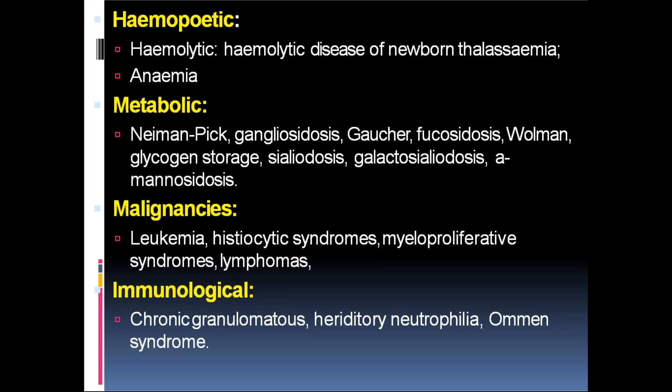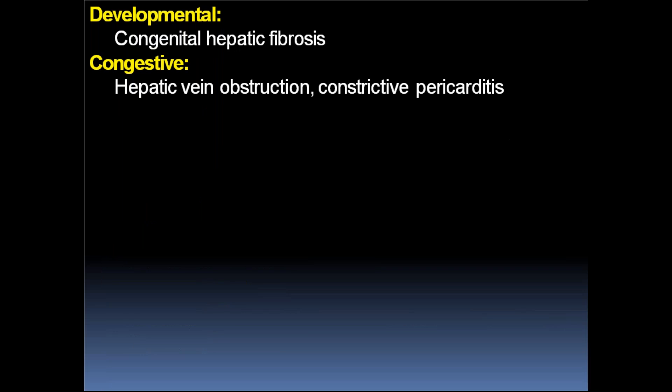Metabolic causes of hepatosplenomegaly: Niemann-Pick disease, gangliosidosis, Gaucher's disease, fucosidosis, Wolman disease, glycogen storage disease, sialidosis, galactosialidosis, mannosidosis. Malignancies: leukemia, myeloproliferative syndromes, histiocytic syndromes, and lymphoma. Immunological causes: chronic granulomatous disease, hereditary neutrophilia, and Omenn's syndrome. Developmental causes: congenital hepatic fibrosis. Congestive causes: hepatic vein obstruction like Budd-Chiari syndrome and constrictive pericarditis.